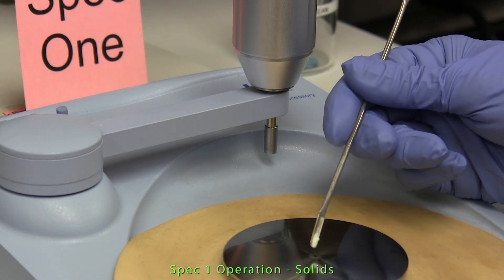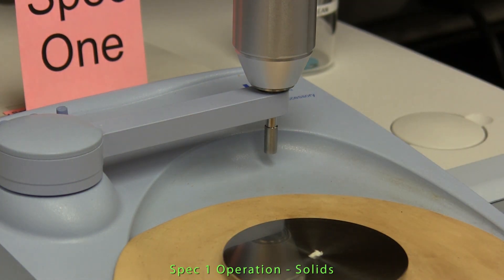Using a spatula, a small amount of the solid sample is added to the mounting plate so as to cover the exposed surface of the crystal.